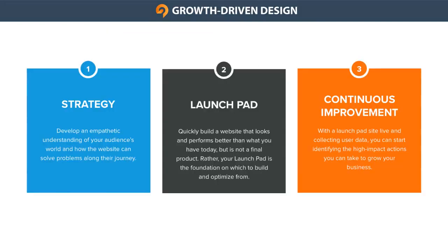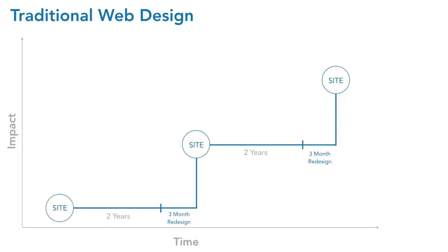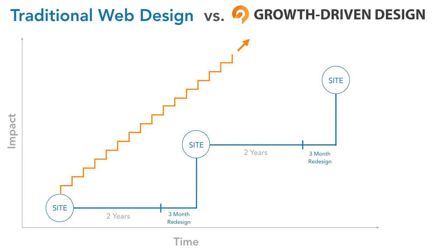To recap, the growth-driven design methodology starts with planning and researching in the strategy stage, which then concludes in the creation of a solid wish list. This wish list is then built into a Launchpad website — a website that looks and performs better than what you have today, but is just your starting point for success. Then you start the continuous improvement stage, where month over month you're improving based off of real user data. This process is a great alternative to the existing nightmare of a launch and the set-it-and-forget-it of traditional web design. Now you're continuously improving and using the website to help all aspects of the business grow, seeing results each and every month.